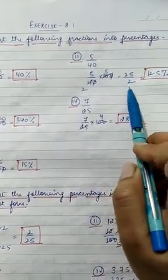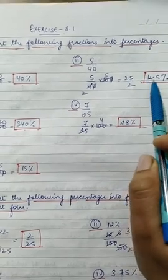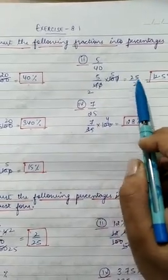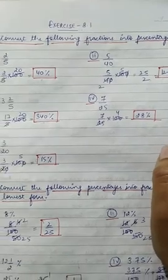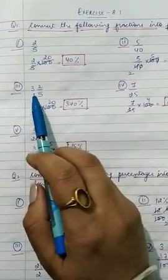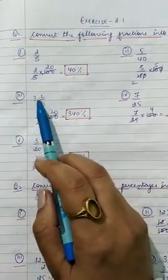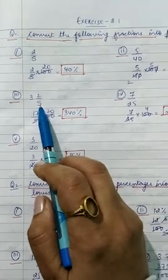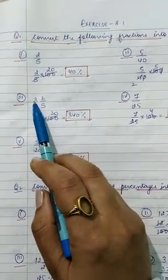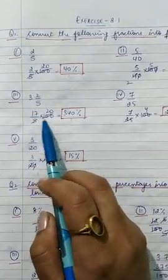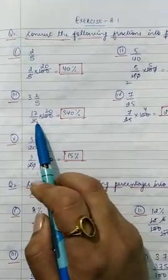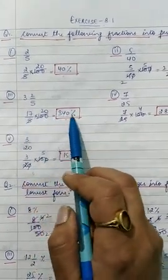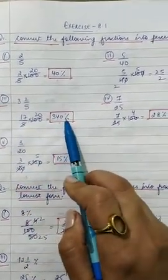After cancellation you will get 25/2 and 12.5%. Next, a mixed fraction is given: 3 and 2/5. Convert this into improper fraction: 15 plus 2 = 17/5. Into 100 — five ones of five, five twenties is a hundred, so 17 into 20 = 340%.